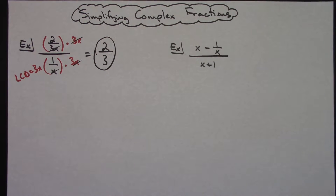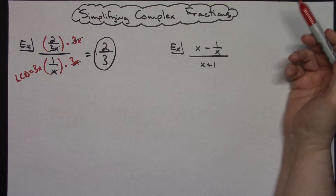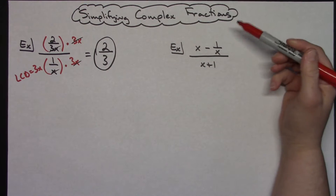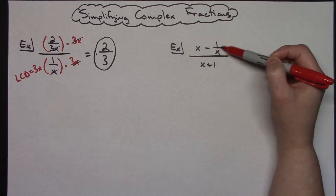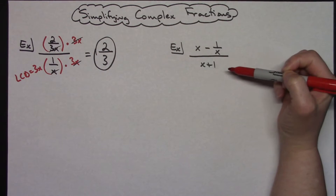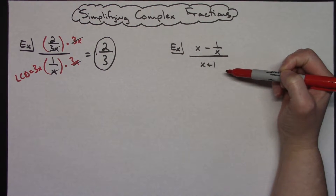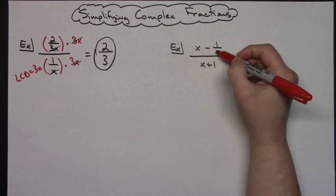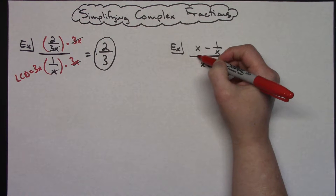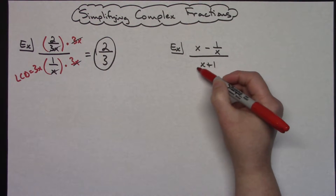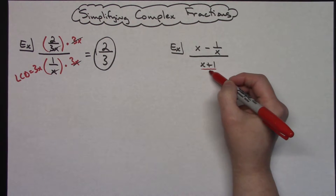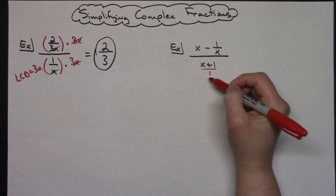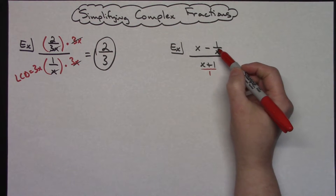Now let's look at our second example. Sometimes, especially the farther along you go, you get more than just a fraction in the top and a fraction in the bottom. I've got a little binomial thing going on at the top. Because this portion of it is a fraction, that's what makes this entire thing a complex fraction. I'm going to look at all my denominators. I have a denominator of x right there. This is over 1, so I do not have a denominator there, and I do not have a denominator on the bottom part either. So my least common denominator really is just that x.